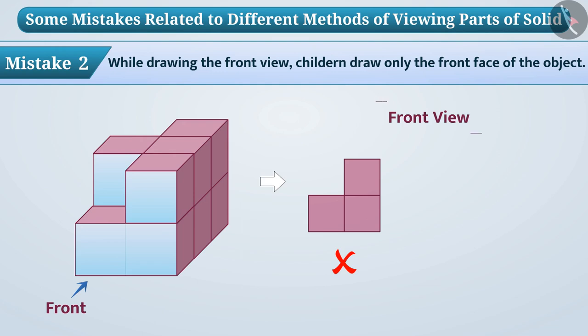So while creating the front view, we should create four squares like this. Keeping this in mind, we can draw the front view of the given object in this way.